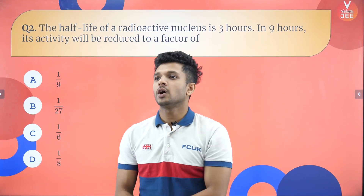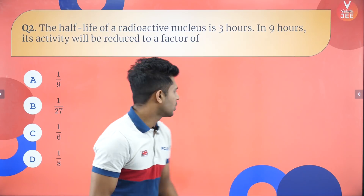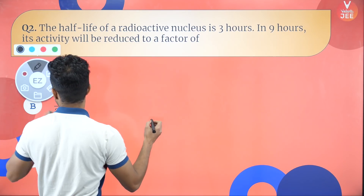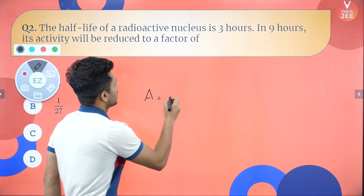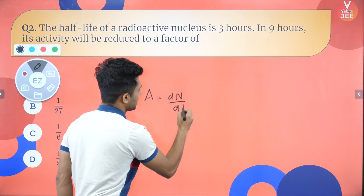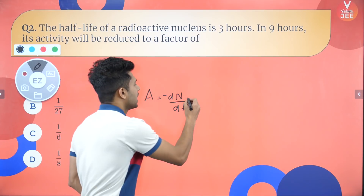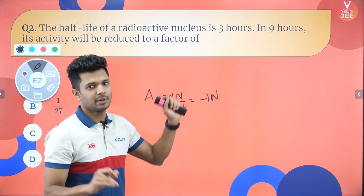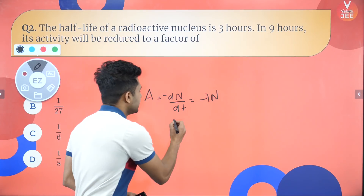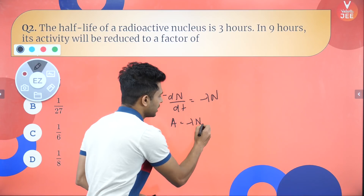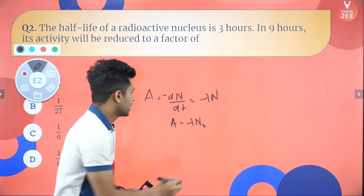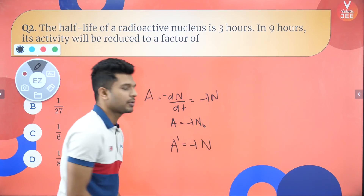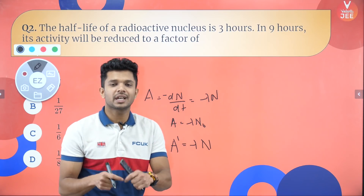The question asks by what factor the activity will be reduced. The formula for activity A = −dN/dt = λN, where N is the number of nuclei present at that moment. Initially, A₀ = λN₀. To find the activity after nine hours, we need λ times the number of nuclei remaining after nine hours.